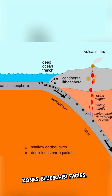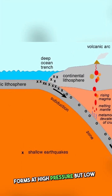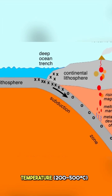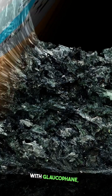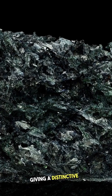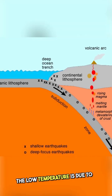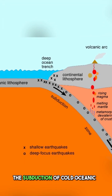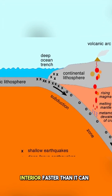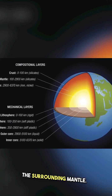Blueschist facies, from subduction zones, forms at high pressure but low temperature, 200 to 500 degrees Celsius, with glaucophane, lawsonite, and crossite giving a distinctive blue color. The low temperature is due to the subduction of cold oceanic lithosphere into the Earth's interior faster than it can equilibrate thermally with the surrounding mantle.